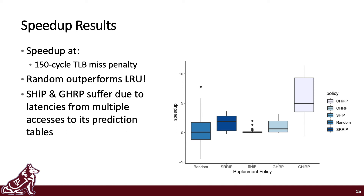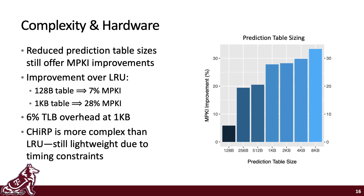Other policies flatten out to a max speedup of 3% by the 320-cycle mark. Assuming a 150-cycle miss penalty, we generate the box and whisker plot on the right. Note how random outperforms LRU overall at 0.42%. SHIP and GHRP do little better than LRU at 0.13% and 0.94% respectively, likely due to latencies from their multiple prediction table accesses. In the middle of the pack is SRRIP at 1.65%. CHIRP outperforms them all at 4.8% speedup. Even with a 128-byte prediction table, CHIRP improves MPKI by 7%, more than any other policy at full size. In configurations based on industry sources, CHIRP comprises 6% TLB overhead with a 1-kilobyte prediction table.